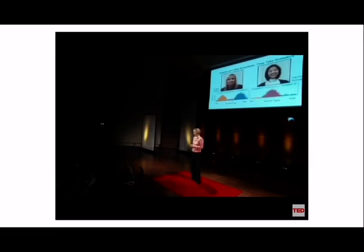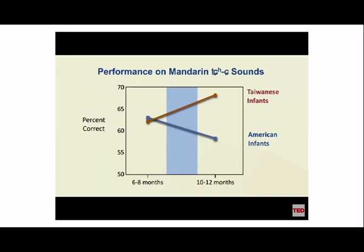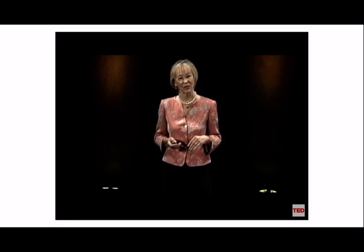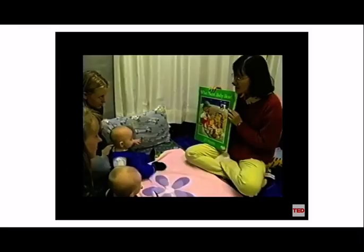This raises questions about bilingual people, who must keep two sets of statistics in mind at once and flip between them depending on who they're speaking to. To test whether babies can take statistics on a brand new language, American babies who had never heard a second language were exposed to Mandarin for the first time during the critical period — like having Mandarin-speaking relatives move in for a month and talk to the babies for 12 sessions.